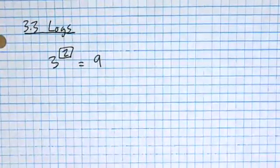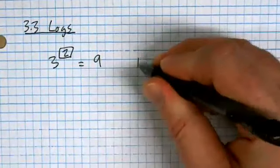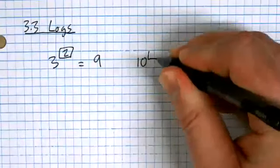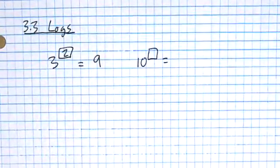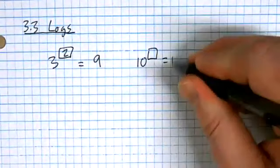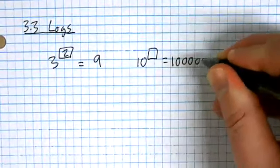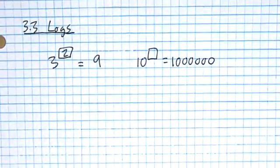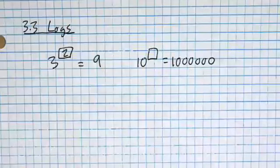Here's a harder one: what exponent could I put onto a 10 to make it equal to one million? What exponent could I put onto a 10 to make it equal to one million?